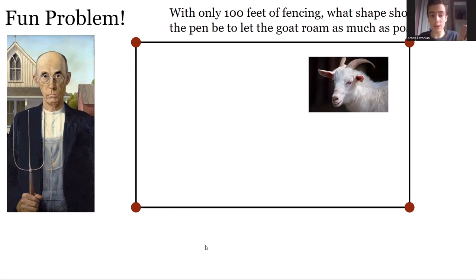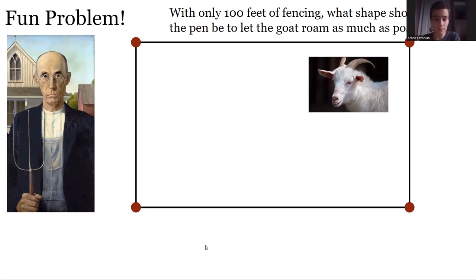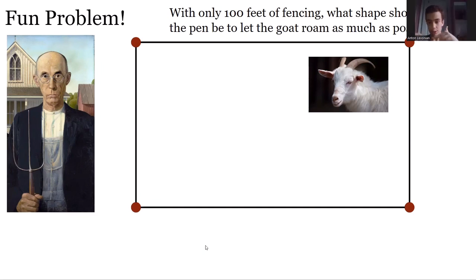Please send your answers privately so other people can think about it without getting spoilers. Think about what the dimensions of the rectangle should be to let the goat graze as much as possible — by 'as much as possible' we mean maximizing area. The 100 feet of fencing means the total perimeter is 100.